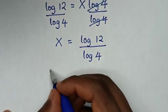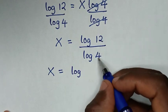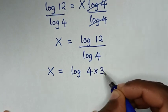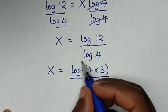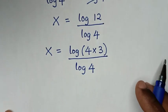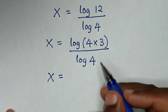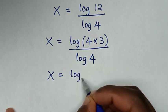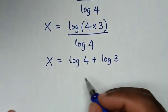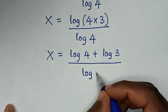Then x is equal to log of 12, and we note that 12 is the same as 4 times 3. So the numerator becomes log of 4 times 3, which equals log of 4 plus log of 3, all over log of 4.